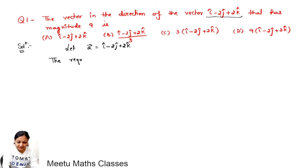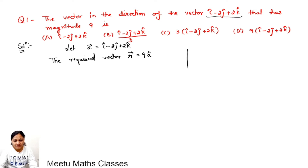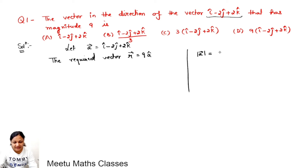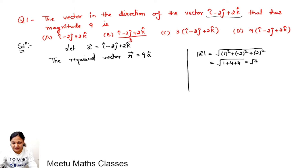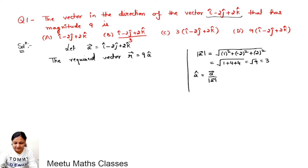The required vector r has magnitude 9 units and we have to give it the direction of a. First of all, we have to find the direction vector of a. For that, find the magnitude of a, which is square root of 1 squared plus minus 2 squared plus 2 squared, that is square root of 1 plus 4 plus 4, that is square root of 9, which equals 3. So the magnitude of a is 3.